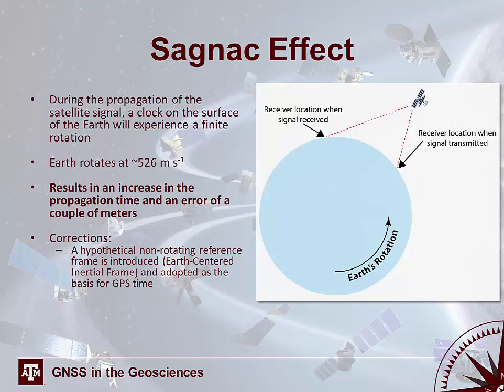Another effect to know is the Sagnac effect: during propagation of the satellite signal, the clock on Earth's surface experiences a finite rotation. The receiver location when the signal is transmitted is different from its location when the signal is received, meaning Earth's rotation introduces error into the time measurement. The Sagnac effect results in a general increase in propagation time at an error of a few meters. To correct for this, a hypothetical non-rotating Earth-centered inertial reference frame is adopted as the basis for all GPS time.